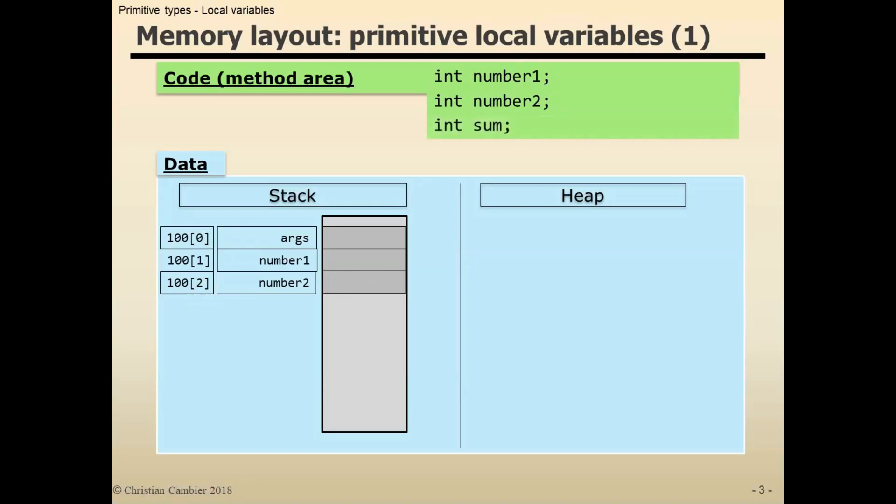Then something similar with the declaration of my int sum, but at position index 3, or the fourth position. This represents my local variables array.